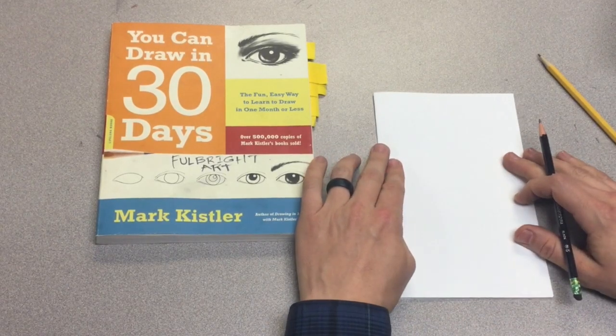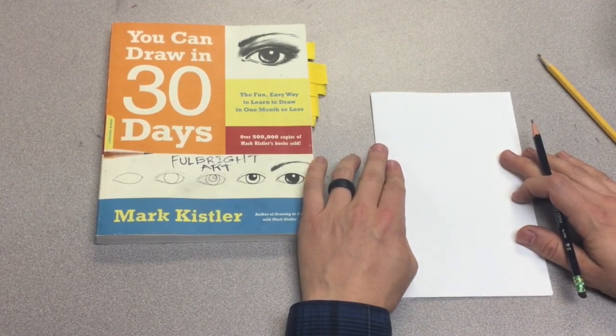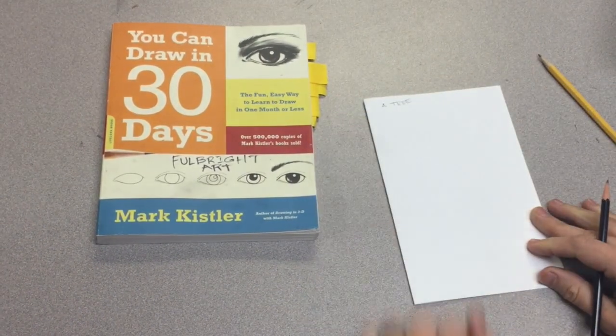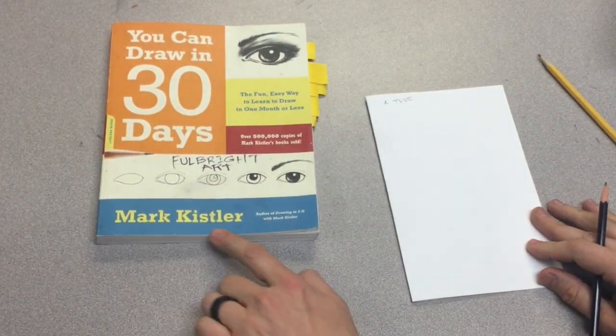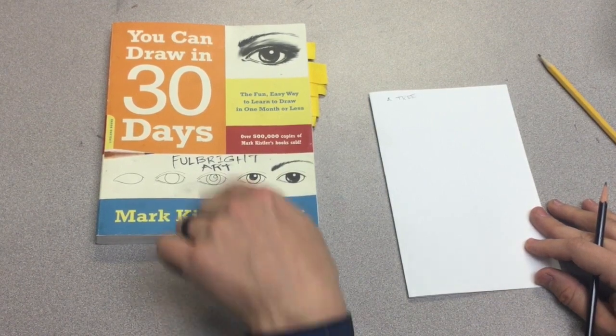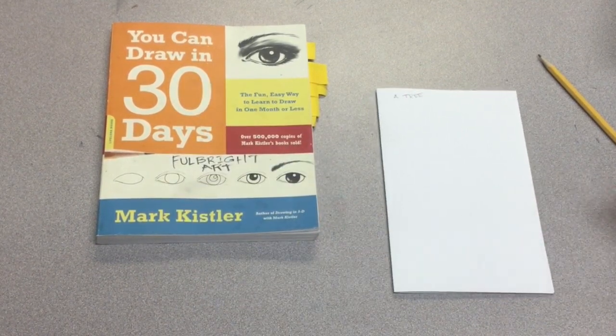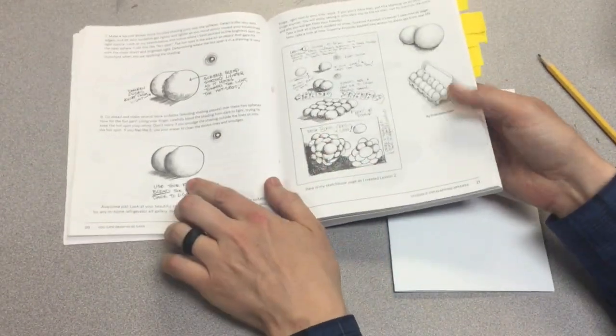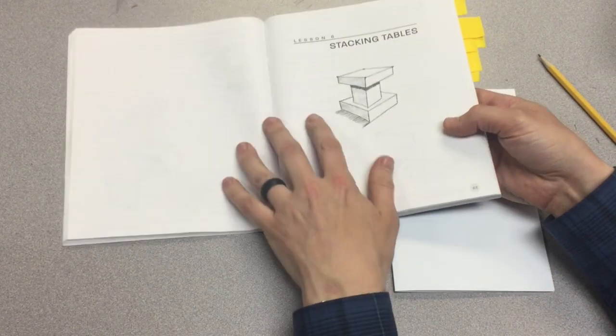This video is a demonstration in how to sketch a tree. I have been using Mark Kistler's book, You Can Draw in 30 Days, to learn some of the basic ways to create three-dimensional space on a sketch.